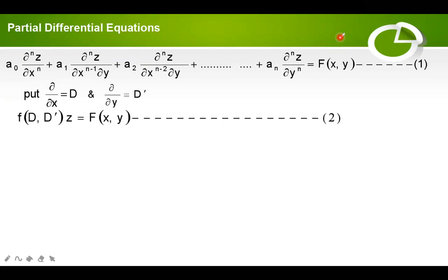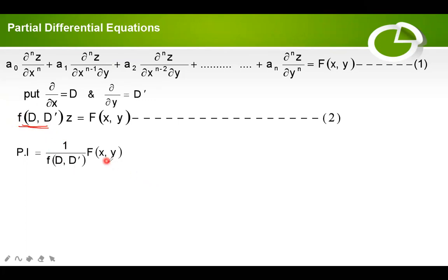Already we have discussed about how to find the complementary function. For that, we have to equate f(D') to 0 and put D equal to m and D dash equal to 1. For the particular integral, write down 1 upon f(D, D') into φ(x, y). The general solution is CF plus PI.